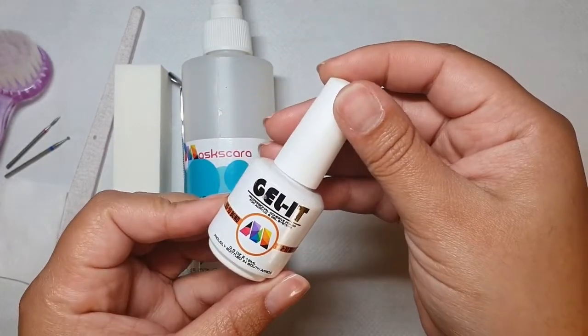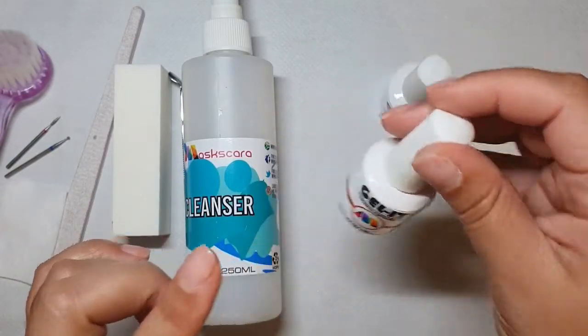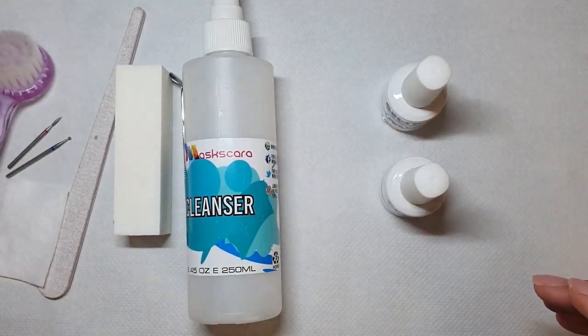Protein bond is an amazing product. We can use it with our acrylics, gel builder gels, infinity, whatever. It's the best bonding agent, like a double-sided thing. It's a non-acid primer which acts as an agent between the product and the natural nail to give you the best bond.